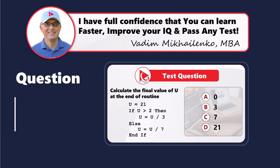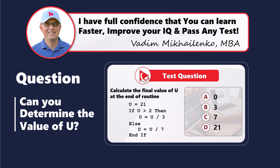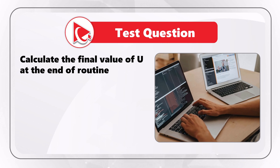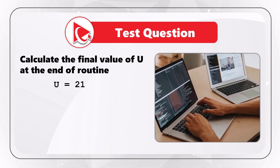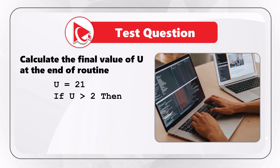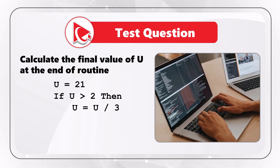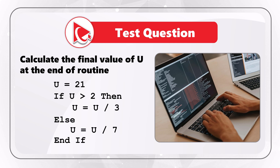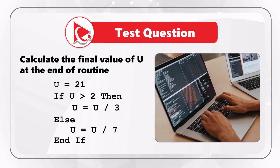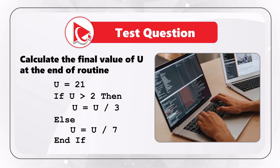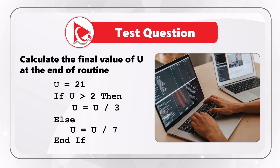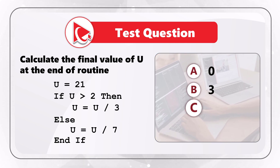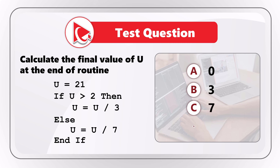Here's an amazing question where you need to calculate the final value of U at the end of the routine. The initial value of U is 21. If U is greater than 2, then U equals U divided by 3; else U equals U divided by 7. Select the final answer out of 4 possible choices: choice A is 0, choice B is 3, choice C is 7, choice D is 21.